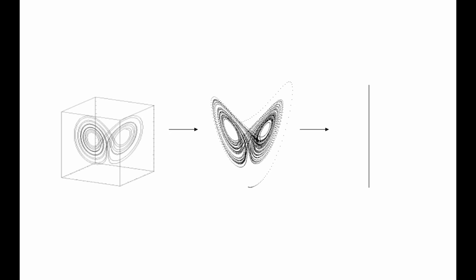On the left I'm showing the Lorenz attractor in three dimensions — X, Y, and Z are the state variables. In the middle is an X, Z projection: Y is gone, so the attractor gets smashed down flat onto the plane. On the right-hand side is what the attractor looks like if I only measure Z — not X or Y — and the attractor gets further smashed down onto a line.